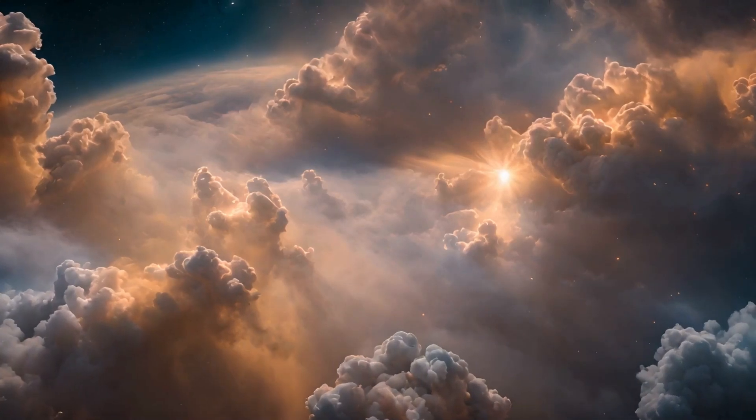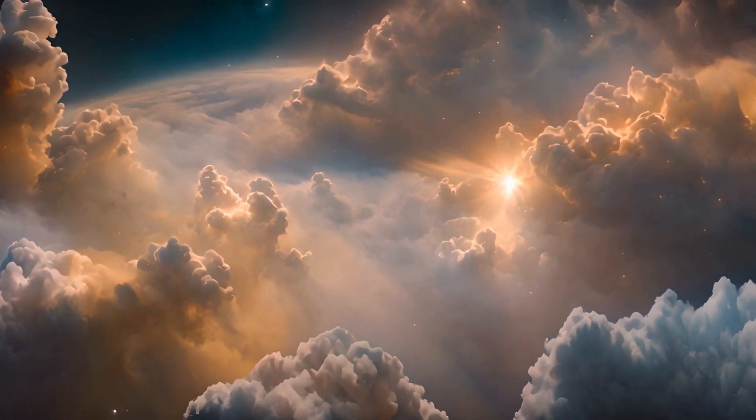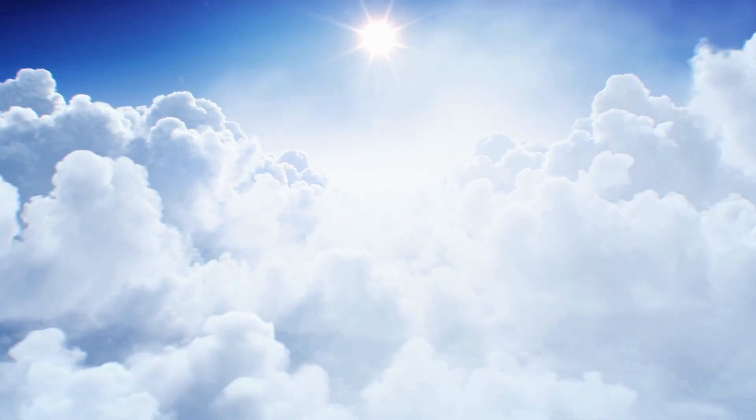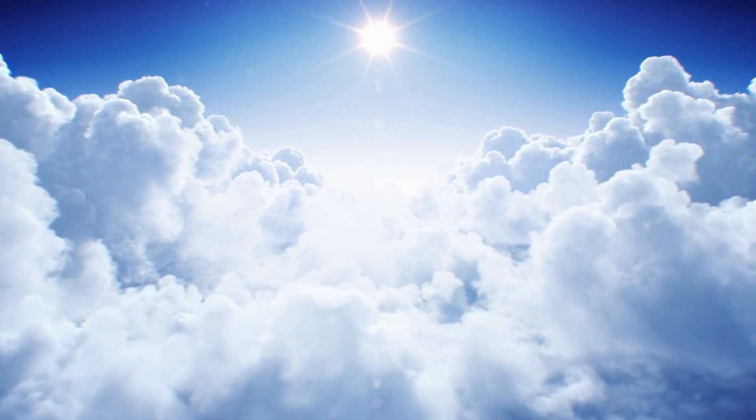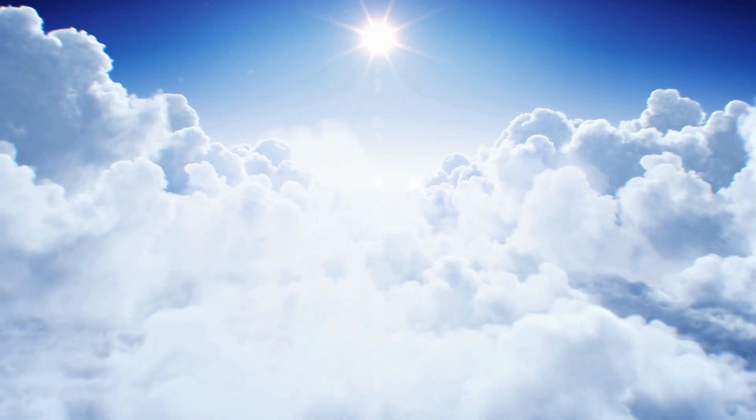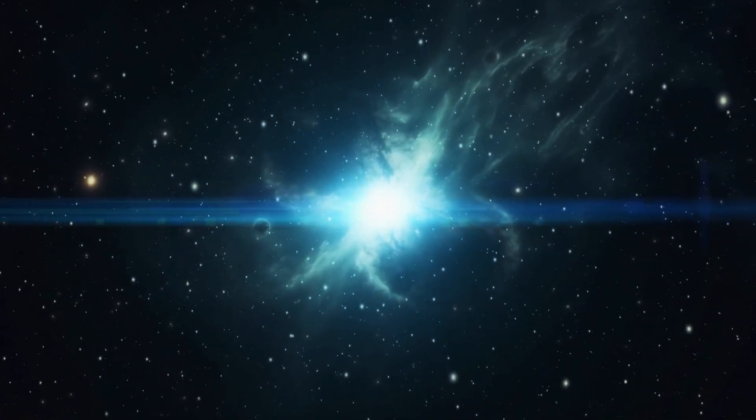A supernova is a cataclysmic explosion, an astounding burst of energy that can outshine an entire galaxy momentarily. This phenomenon occurs when there is a sudden change in the star's core. Such changes can arise if a star absorbs too much matter from a neighboring star, or in Betelgeuse's case, it could be from the exhaustion of its nuclear fuel, which cascades its mass into the core, setting the stage for a cataclysmic collapse.